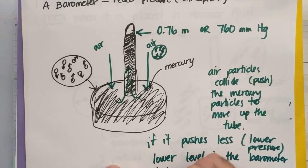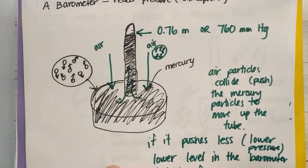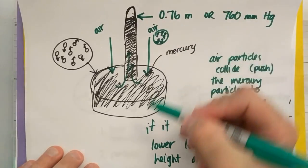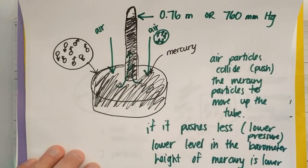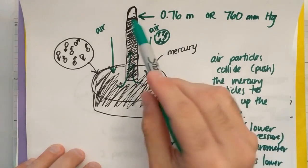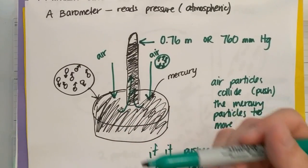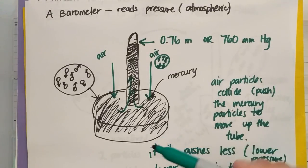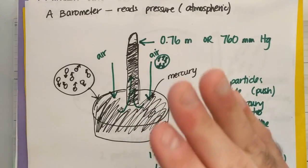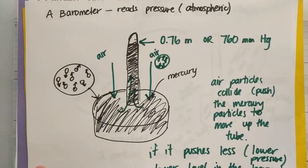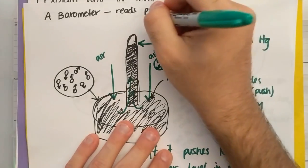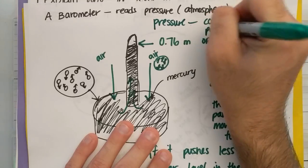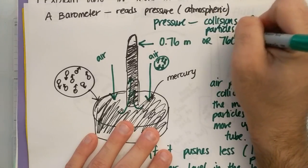If somehow atmospheric pressure was pushing more, the height should increase. Make sure you remember — there's a video posted in Google Classroom on where the barometer came about. Recall how we read barometers and how mercury moves because air is pushing it. Pressure has to do with collisions of particles with each other and the walls of the container.